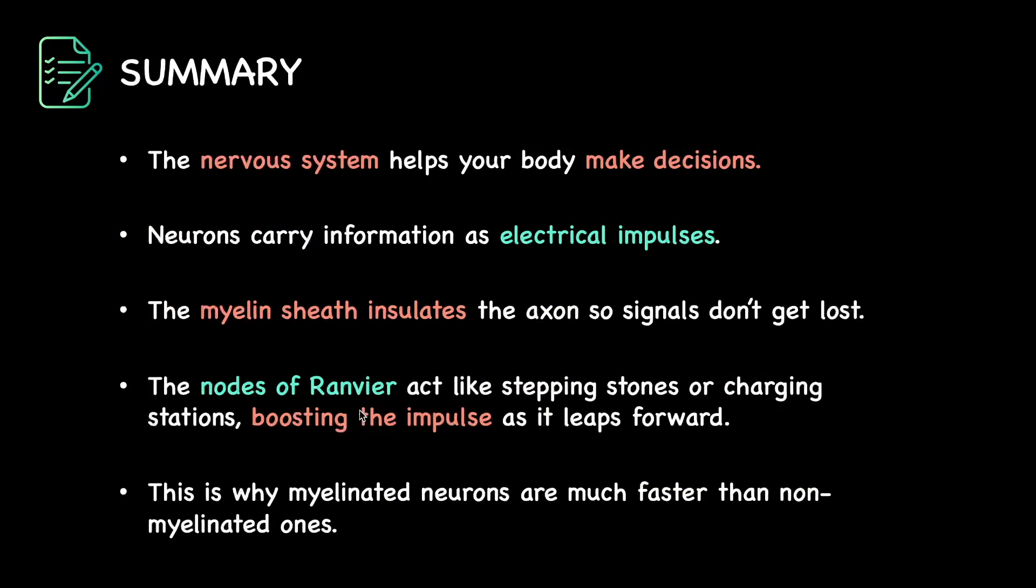So therefore, quickly to recall, we know that the nervous system is responsible for helping our body make important decisions. They carry information in the form of electrical impulses. Myelinated neurons have myelin sheath that insulates the signal. And the node of Ranvier act as stepping stones or charging stations that boost the impulse as it leaps forward. And this helps for much faster conduction of the impulse when compared to the non-myelinated ones. So with this, I hope that the concepts related to the node of Ranvier is now clear to you.